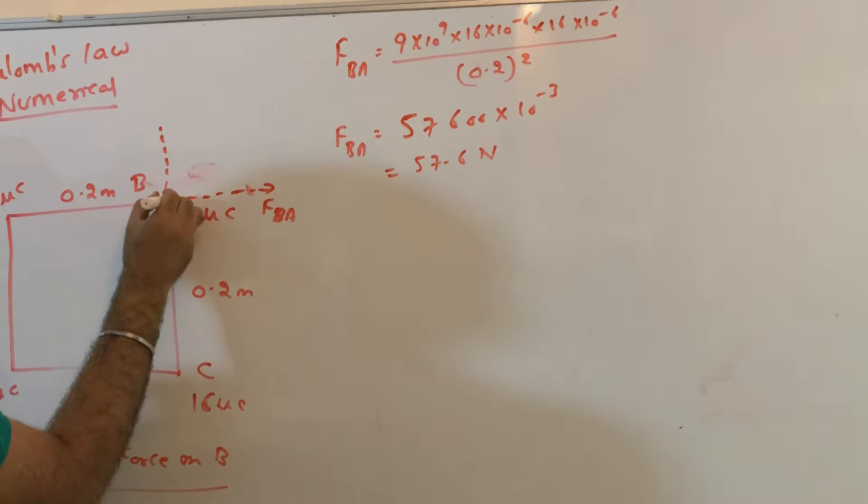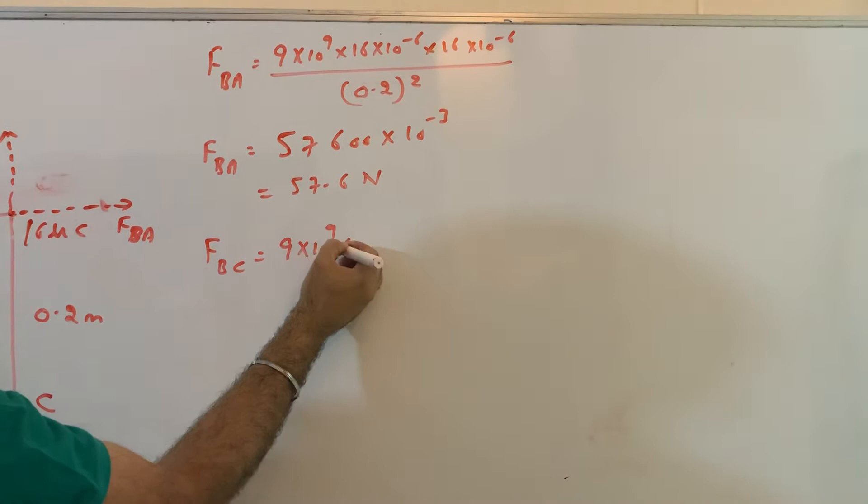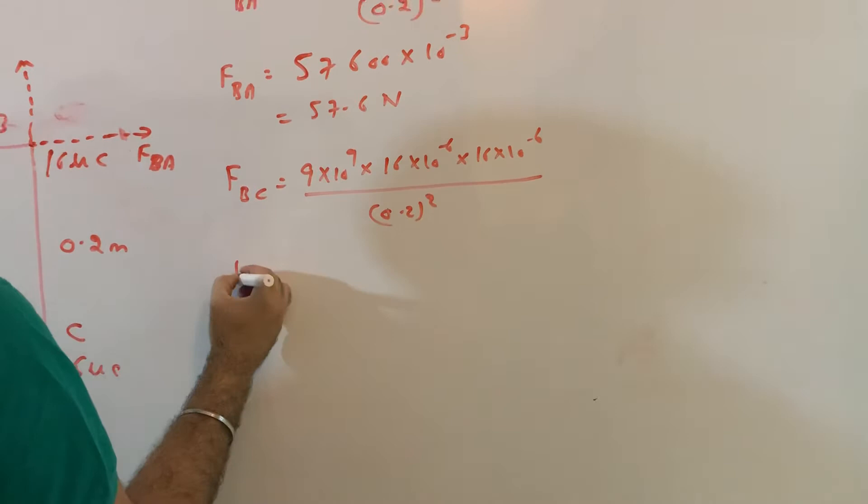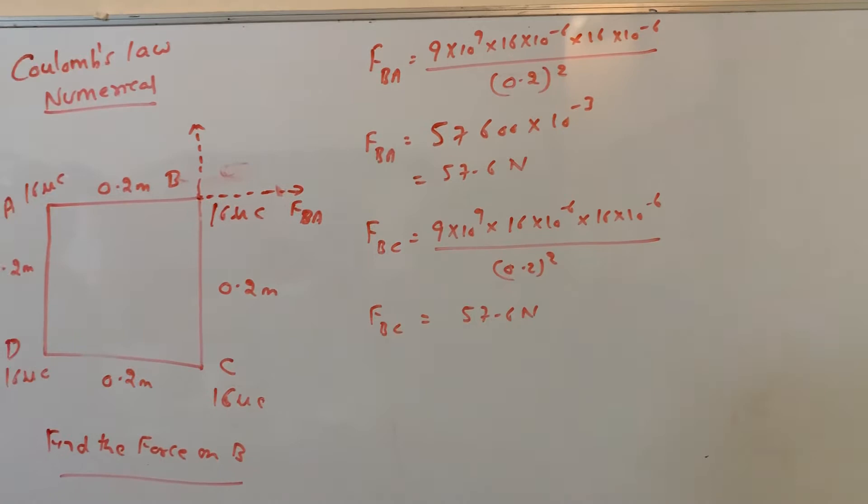Similarly force on B due to A, similarly force on B due to C, again it will be in this direction. So you will get force on B due to C: 9 into 10 power 9 into 16 into 10 power minus 6 into 16 into 10 power minus 6 divided by, so this is 0.2 whole square.